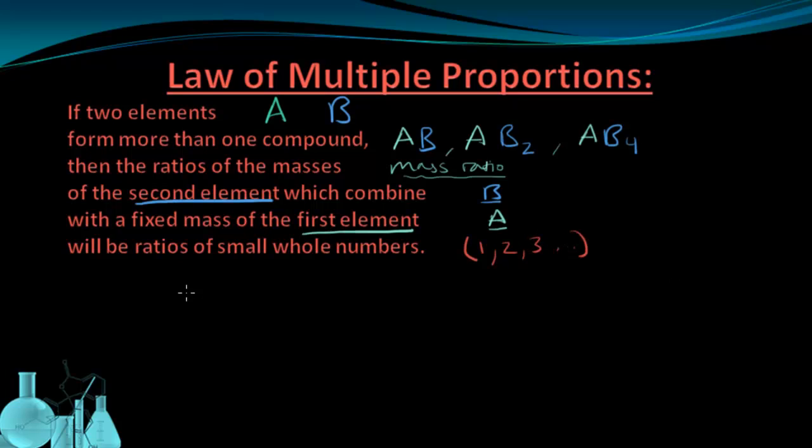Let's run through what this says with two actual elements forming actual compounds. So we have carbon, that's going to be our first element, and we're going to have oxygen as our second element. Now we need to have a fixed mass of the first element.